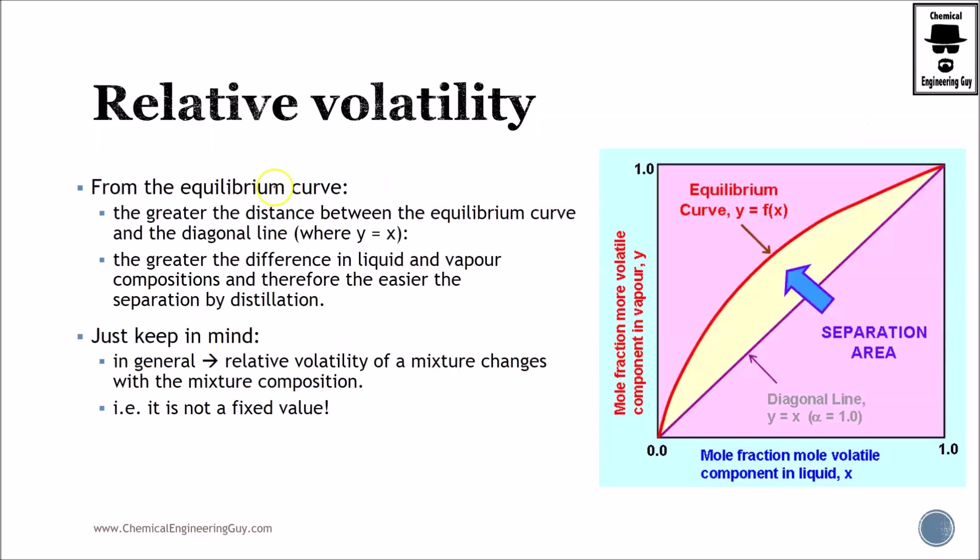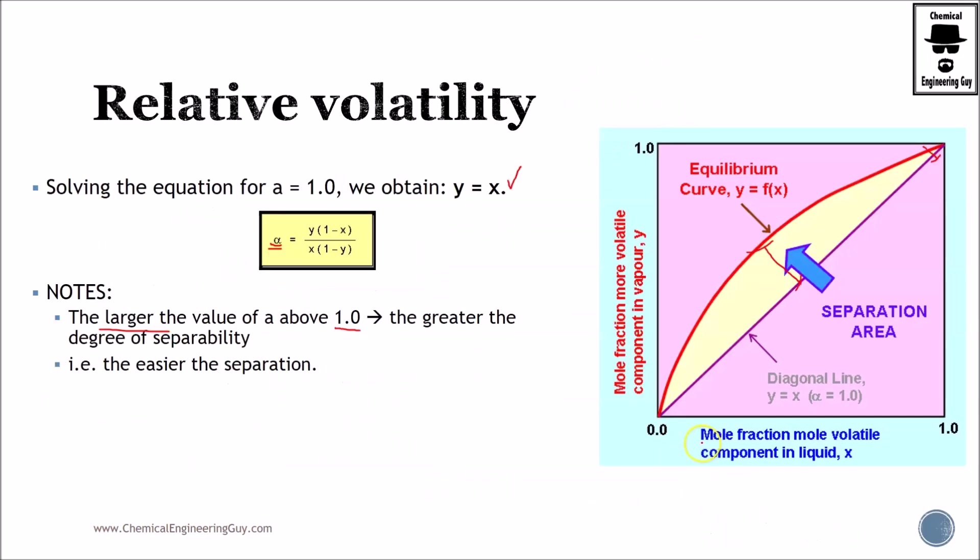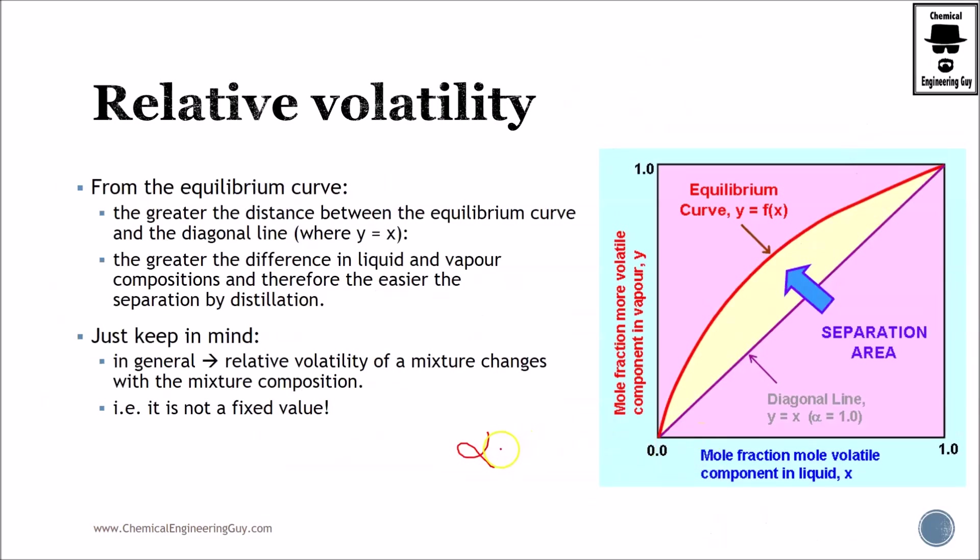Last notes: in general, relative volatility of a mixture changes with the mixture composition, so that's also very important. Alpha will be one value for a set of temperature, pressure, and composition. Let's say that we are increasing temperature, and increasing temperature typically changes composition. Pressure remains the same, so we will have a new alpha which not necessarily needs to be the same. That's very important to keep in mind.